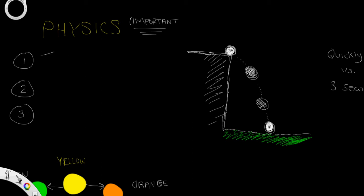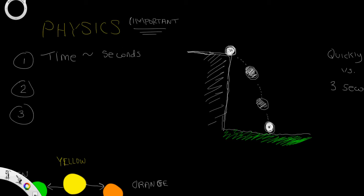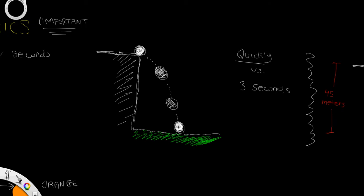For example, when it comes to time, units are measured in seconds. Instead of saying a ball fell quickly, we can say that the ball fell in three seconds, giving us a better idea of how quickly the ball fell.